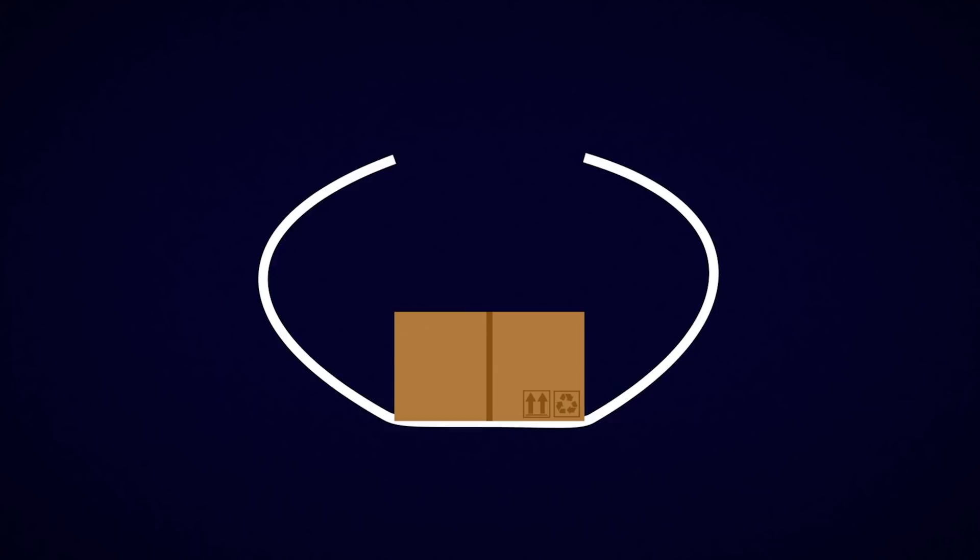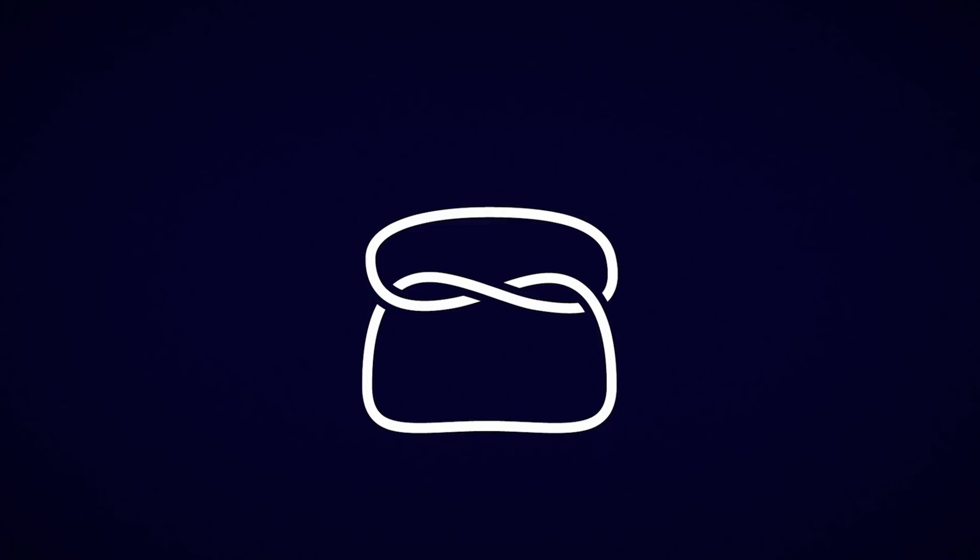To make a mathematical knot, imagine looping a string around a box and tying a loose half-knot across the top. Then, take the two loose ends and fuse them together. Throw the box away, and you are left with a continuous loop of string that is entangled in the middle — your very own mathematical knot. Of course, you could also save yourself the effort and go out and buy a pretzel.